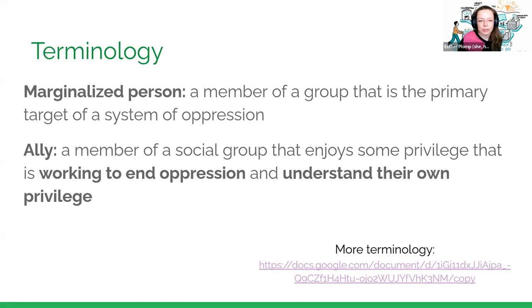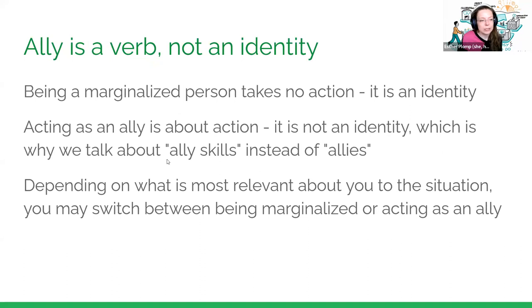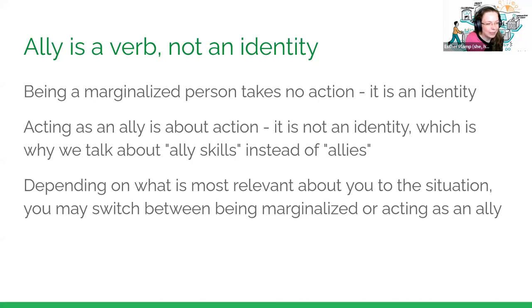An ally is a member of a social group that enjoys some privilege and is working to end oppression and to understand their own privilege. I identify as an ally because I try to be more inclusive of people with disabilities and try to understand my own privileges. But ally is a verb and not an identity. Being a marginalized person is an identity, but being an ally is really about the action. This is why we talk about ally skills instead of allies — it's really dependent on what you're doing.